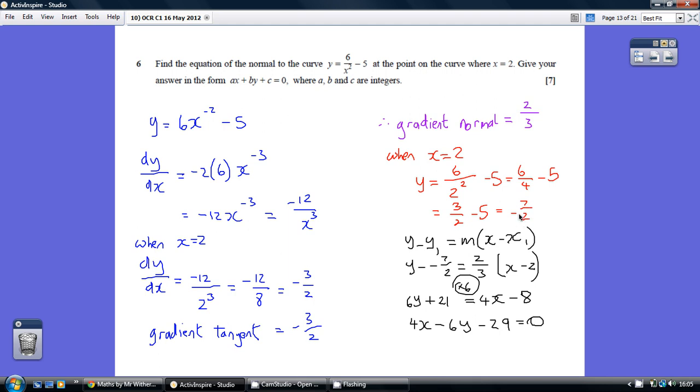So one point on our normal is 2, minus 7 over 2. So we're now fully armed to use the classic equation of a line formula, this one here. Substituting in our one point, x1 and y1, substituting in our gradient gives us this.